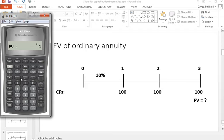Now we want to calculate the future value, so compute future value, and that's negative 331. What that means is that if we are to receive three $100 payments,